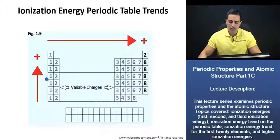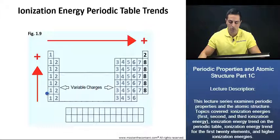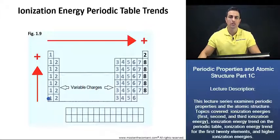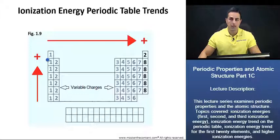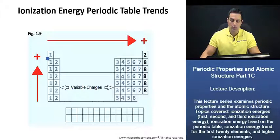The valence electrons are going to be easier to remove — they're not going to require as much energy. Thus, they have a lower ionization energy. As we move up a group, those valence electrons are going to be closer to the nucleus and they're going to require more energy — thus, a higher ionization energy to remove them from the atom.